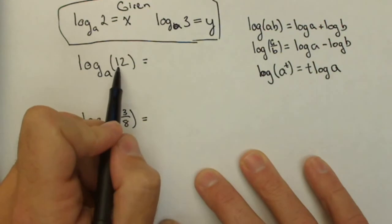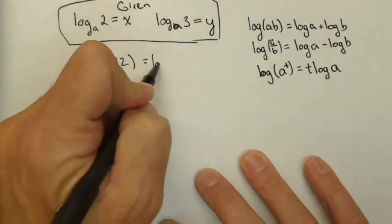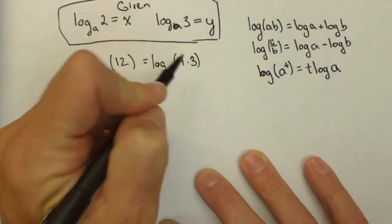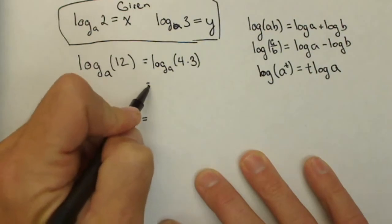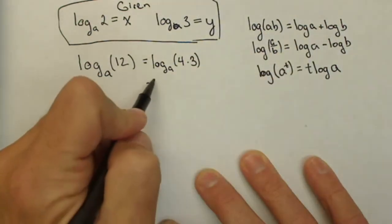So if we think about how to factor 12 so that we can get a base 2 and base 3, then we could say okay well that's log base a of 4 times 3, which is based on our property here we can rewrite that as the sum of two separate logs.